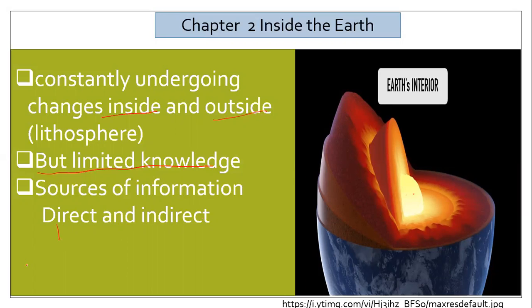For this reason, there is another important direct source: volcanoes. Volcanoes are a very good source. The matter inside the Earth gets melted because of heat, and when there is a lot of pressure, it rises from the Earth as lava along with rocks. From volcanoes, we get an idea of what things can happen within the Earth.